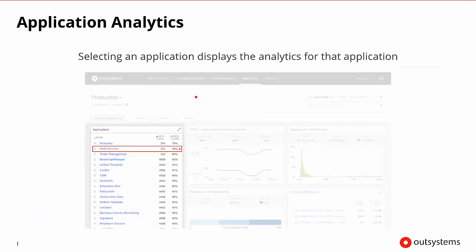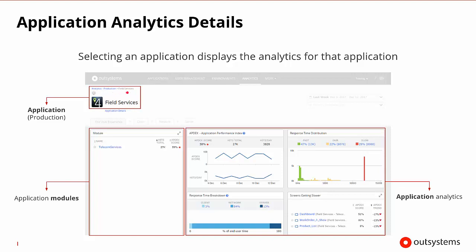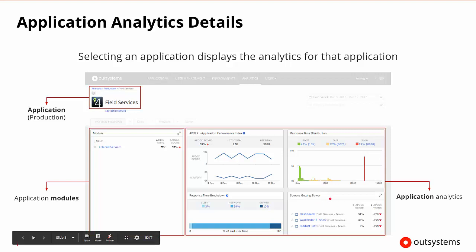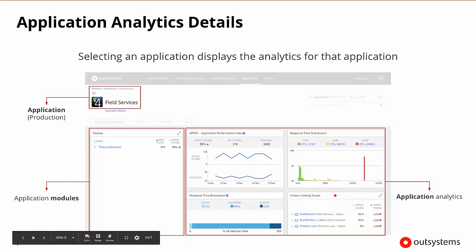Starting at the top, we have application analytics. Looking at a particular environment, we can see all the different applications. If we select a specific application, it moves to the top — here we're in production looking at the Field Services app. We can see its icon, the modules inside it, its Appdex score, its specific response time and response breakdown, and a trend showing whether things like applications and modules are getting slower over time.